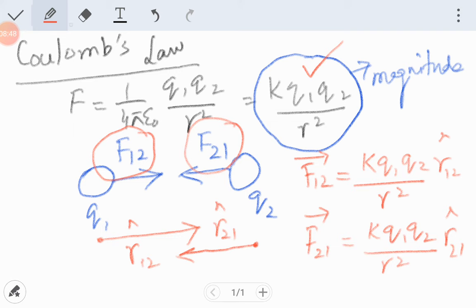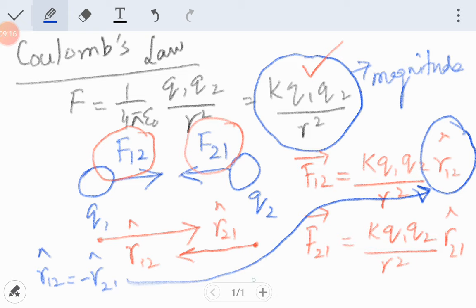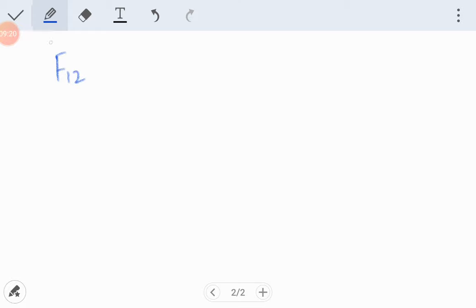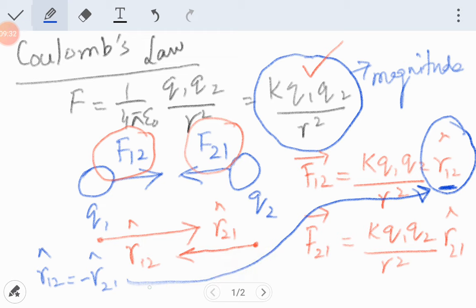Now you see that both the unit vectors are in opposite direction. So I can say r̂₁₂ is equal to minus r̂₂₁. So if I replace this r̂₁₂ by minus r̂₂₁, this equation will become F₁₂ equals K q1 q2 over r² times minus r̂₂₁. What I have done is I have replaced this r̂₁₂ with minus r̂₂₁.